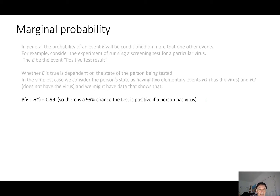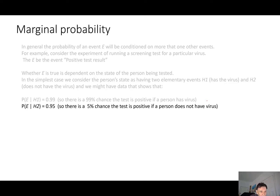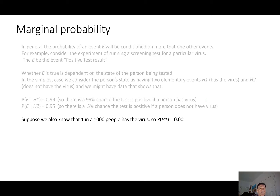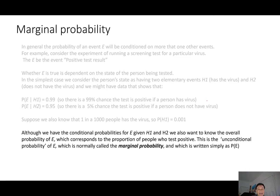We might have data showing that P(E|H1) = 0.99: there's a 99% chance the test is positive if the person has the virus. We might also find that P(E|H2) = 0.05 — a five percent chance of a false positive. Suppose we also know that one in a thousand people has the virus, so P(H1) = 0.001. Although we have the conditional probabilities for E given H1 and H2, we're also interested in the overall probability of E — the probability that a person tests positive before we've seen them. This is called the unconditional or marginal probability of E, written simply as P(E).